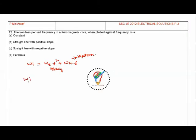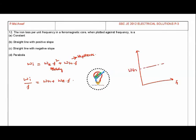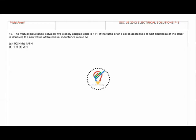Dividing by frequency, iron losses per unit frequency equals WH plus WE times F. If you draw the curve with frequency on the x-axis, WH is a constant, and WE times F increases linearly with frequency. So the graph is a straight line with positive slope.